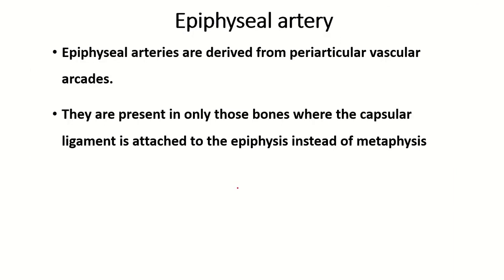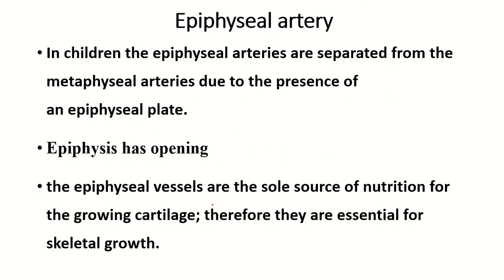Epiphyseal arteries are derived from the peri-articular vascular plexus. They are present only in those bones where the capsular ligament is attached to the epiphysis instead of the metaphysis. In children, the epiphyseal artery is separate from the metaphyseal artery due to the presence of the epiphyseal plate.